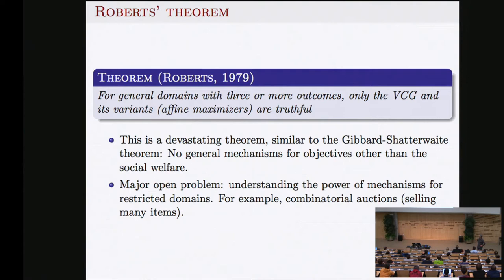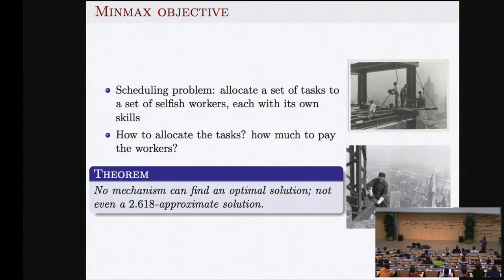For general domains VCG is the only truthful mechanism. If you restrict the problem things are less clear — this is a major open problem. For example, for auctions with multiple items we don't know what the truthful mechanisms are — probably the most important open problem in mechanism design.